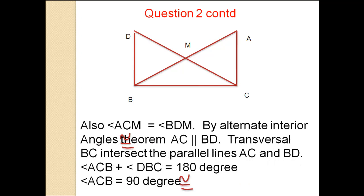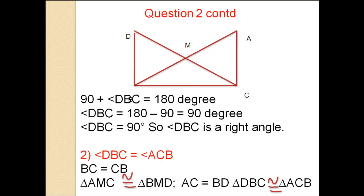Also angle ACM equals angle BDM. By alternate interior angles theorem, AC is parallel to BD. Transversal BC intersects the parallel lines AC and BD. So angle ACB plus angle DBC equals 180 degrees. Since angle ACB is 90 degrees, angle DBC equals 90 degrees.